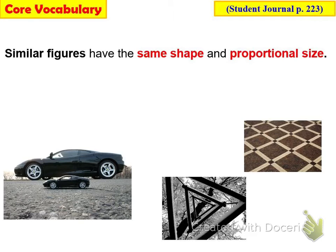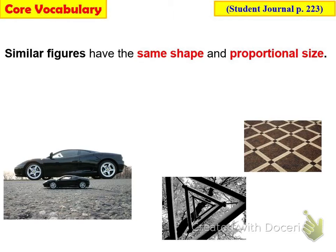You see these all the time with miniatures. You've got this car — it is a Ferrari — and then you've got a little mini one. They are similar to each other, but one is just sized down and one is bigger. Same thing with these triangles: they're all the same triangle, just smaller and smaller. And the same thing with squares.